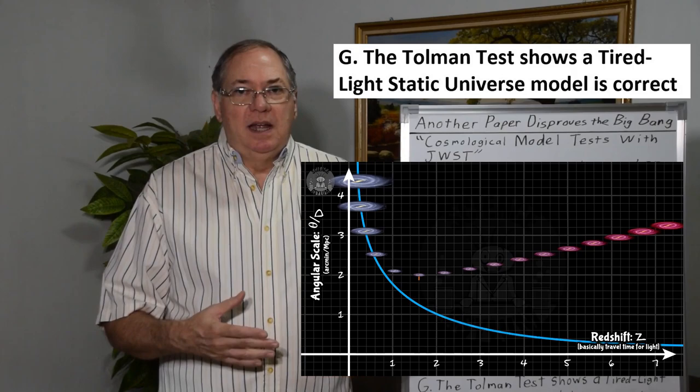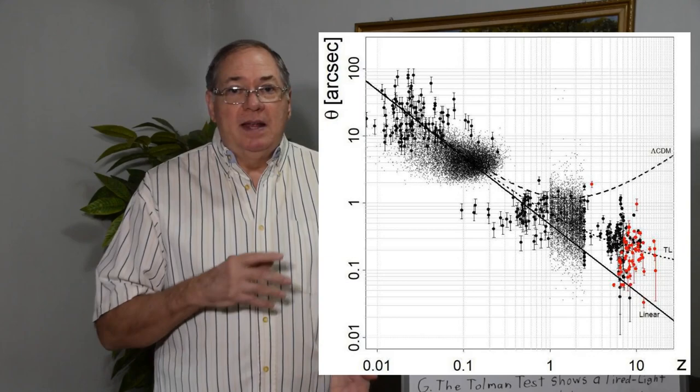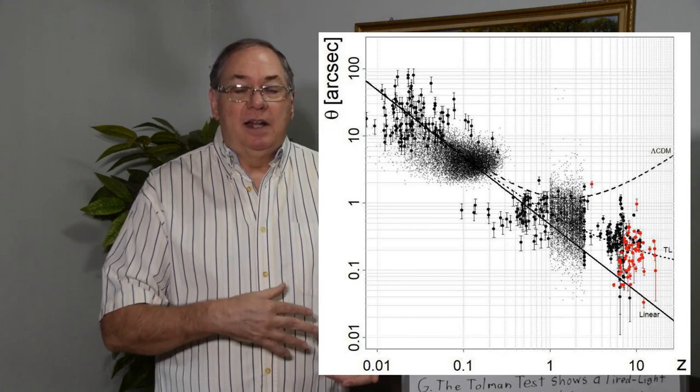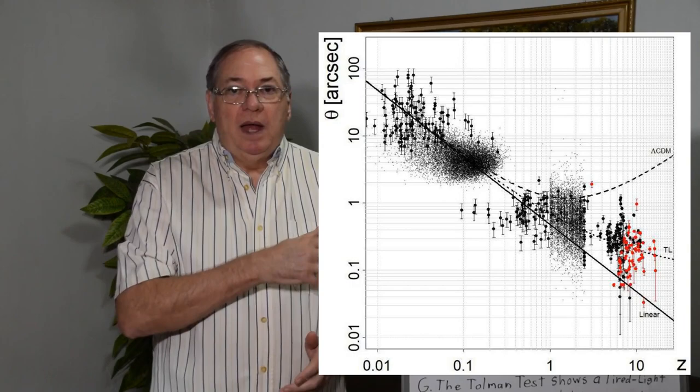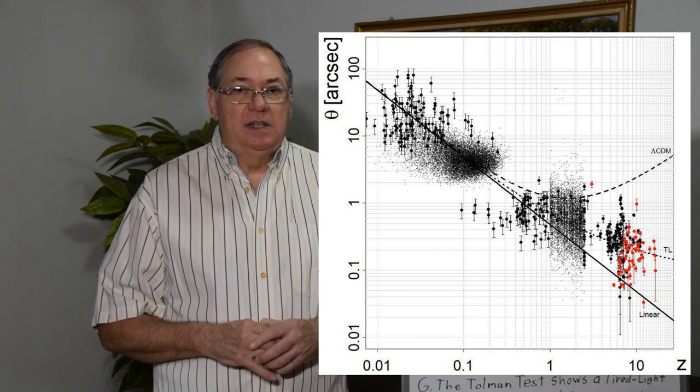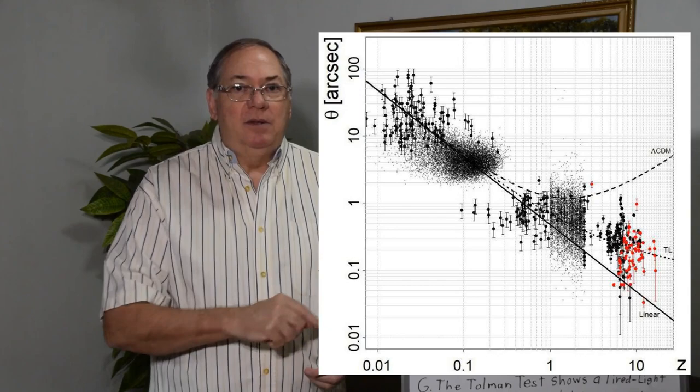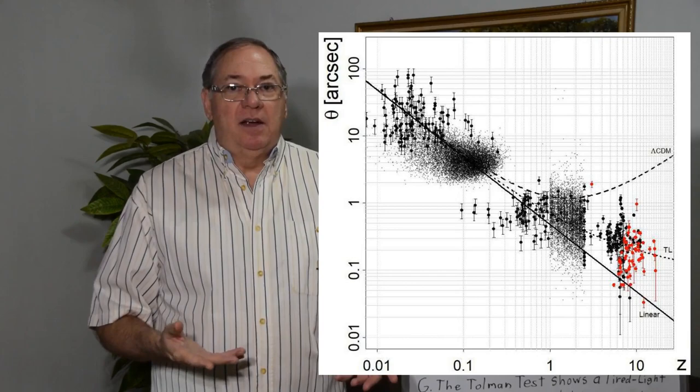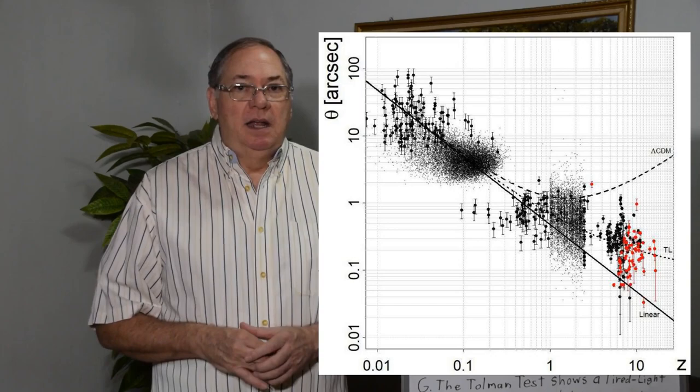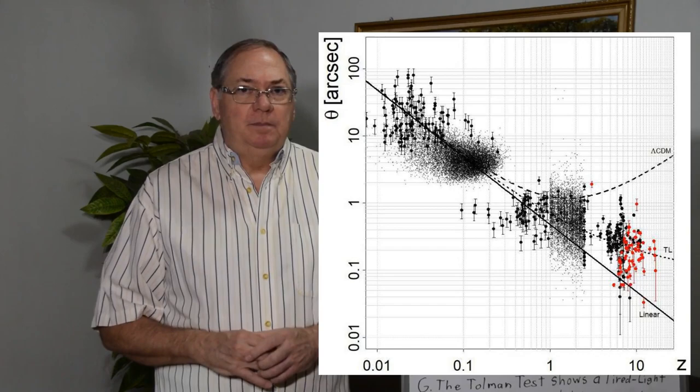So this is the test that the paper discusses. They looked at data in the black dots, which were pre-JWST, and the red dots are from JWST. You can see that while there's a wide range of distribution of angular size to these galaxies, they follow the tired light model line, the one in the middle, which tells us that the tired light model of the universe must be correct.